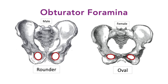The obturator foramina also differ between the male and female pelvis. The obturator foramina are those large openings, and because the male pelvis is taller and more narrow than the female pelvis, the obturator foramina of the male pelvis are rounder than the ones of the female, which are oval.